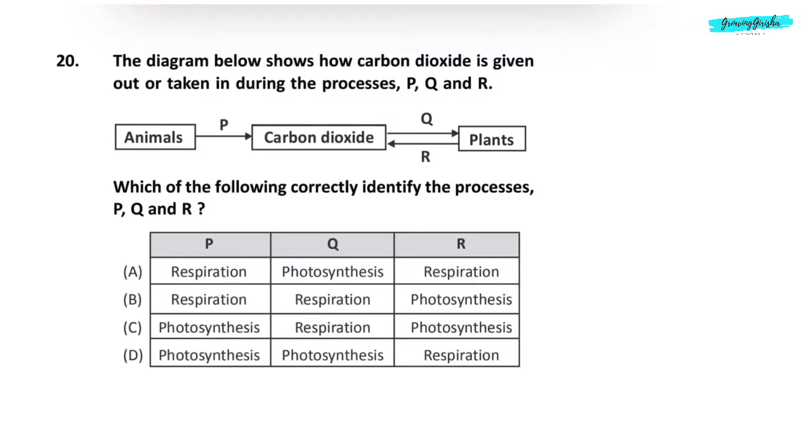The diagram below shows how carbon dioxide is given out or taken in during the processes P, Q and R. P, animals release carbon dioxide. This process is called respiration. Then carbon dioxide is taken in through the plants. This process is photosynthesis. And then plants release carbon dioxide which is a process of respiration. So correct answer is option A.